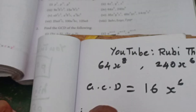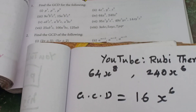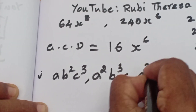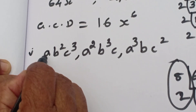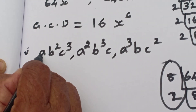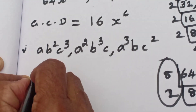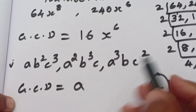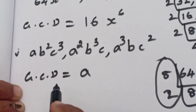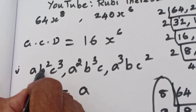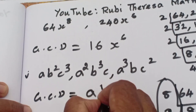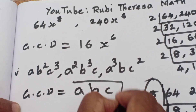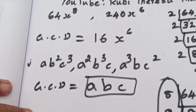Next, fifth one: a b squared c cube, a squared b cube c, a cube b c squared. First see the same base. A, a squared, a cube — which one is the GCD? A, because a is the highest common with the lowest exponent. Next: b squared, b cube, b — the GCD is b. Then c cube, c, c squared — the GCD is c. So the GCD is a b c.